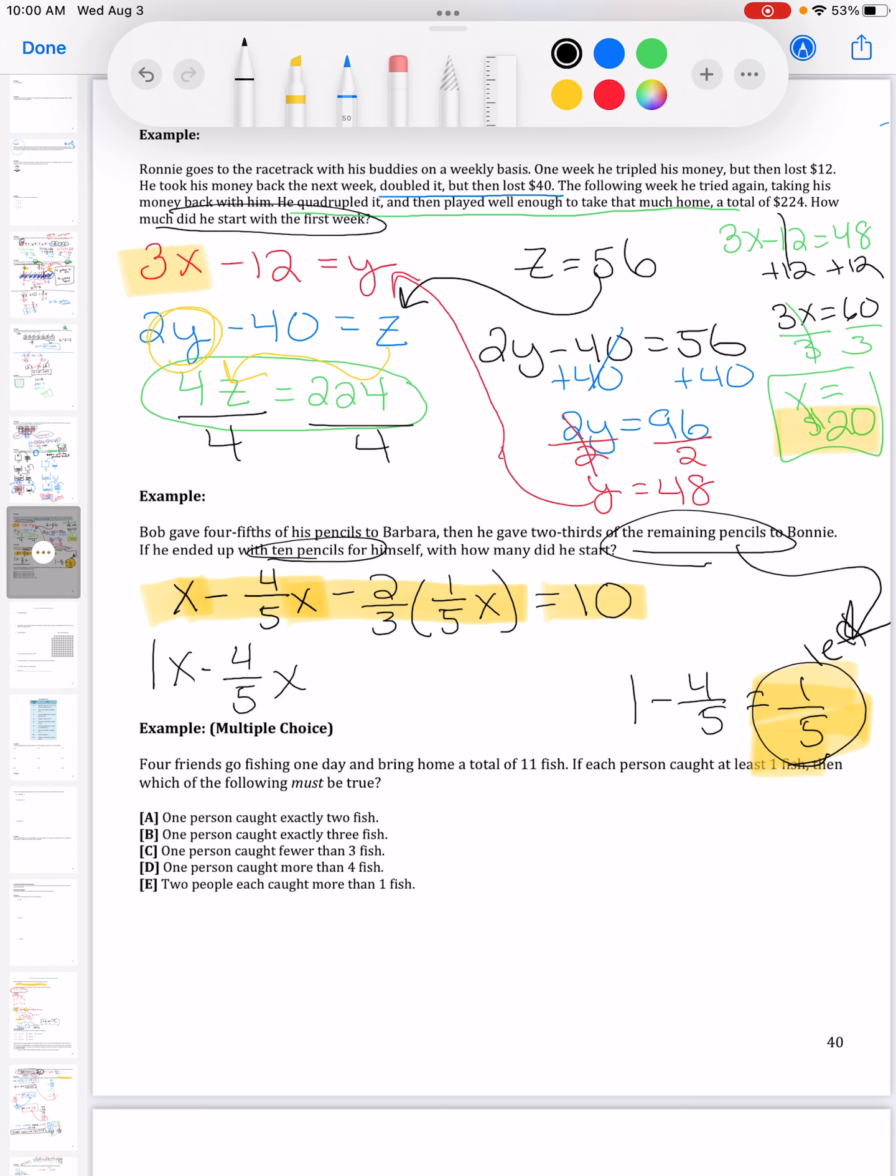A couple different ways you can type this in your calculator. You don't want to type the X in, I'm just going to write this as a 1x. There's an invisible one in front of it. Two-thirds times one-fifth is two-fifteenths X.